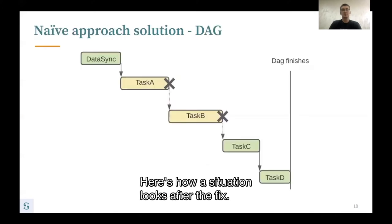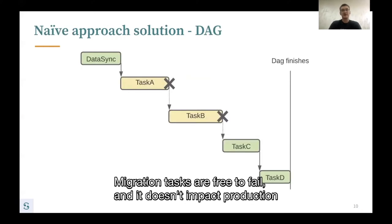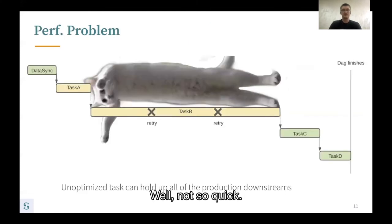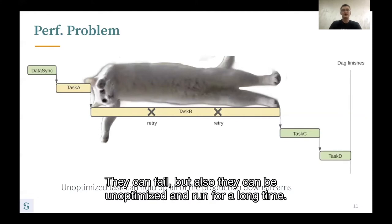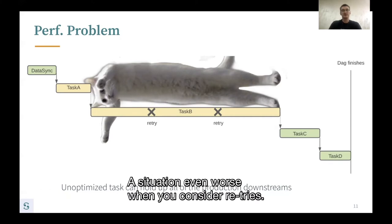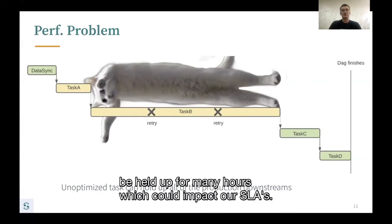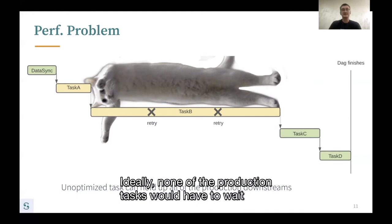Here's how the situation looks after the fix — migration tasks are free to fail and it doesn't impact production tasks downstream from them. Well done, right? Well, not so quick. Migration tasks aren't reliable — they can fail, but they can also be unoptimized and run for a long time. The situation is even worse when you consider retries. All production tasks downstream from long-running migration tasks could be held up for many hours, which could impact our SLAs.